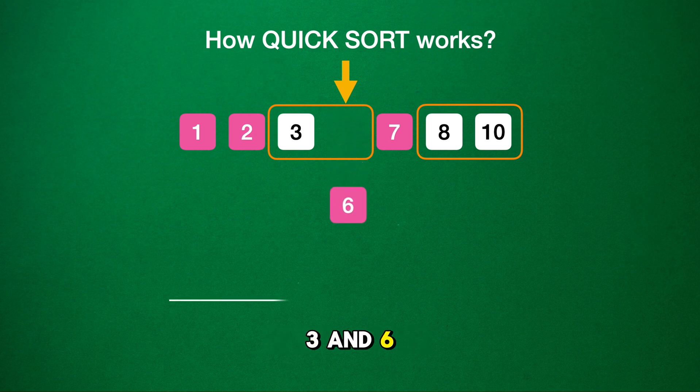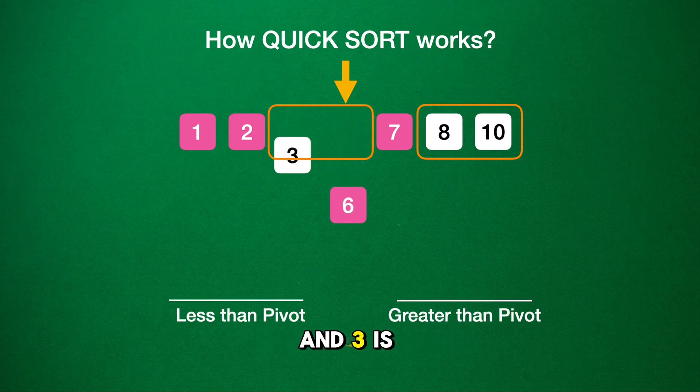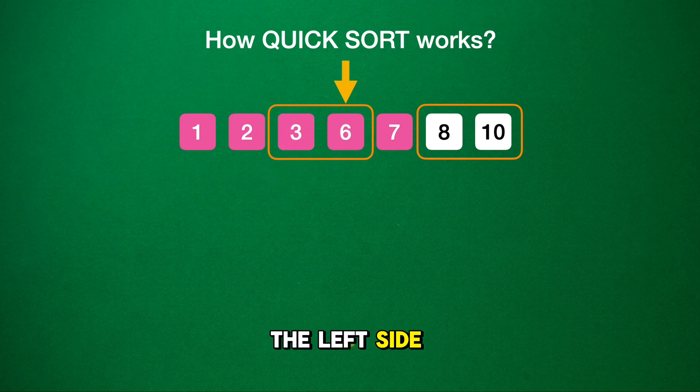Here we have 3 and 6. Since there are only 2 numbers, and 3 is less than 6, they are already in the correct order. The left side of our original array is now completely sorted.